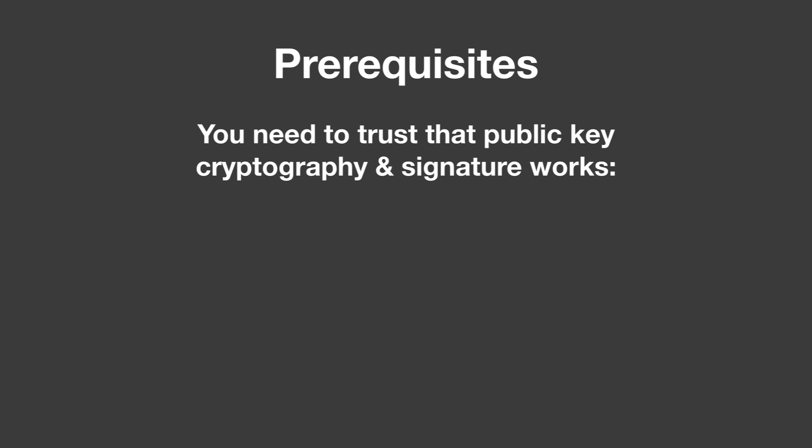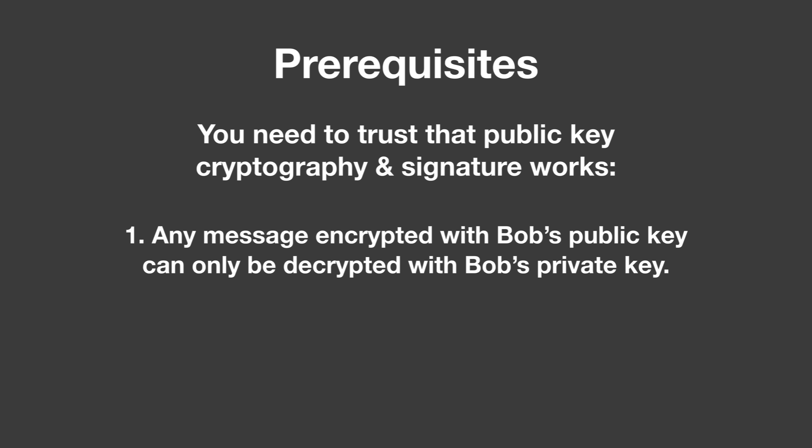If you're asking what is public key cryptography and signature, it's basically a couple of very simple mathematic functions that only work in one way, or that are much easier to compute in one way than another way.